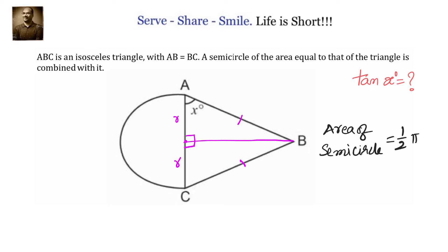Coming to the isosceles triangle, what will be the area? Half into base into height. Here base is AC and height h is the perpendicular drawn from B down to AC. That is half into base into height.